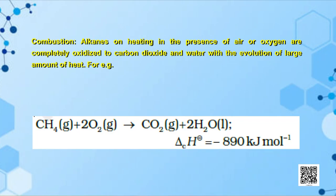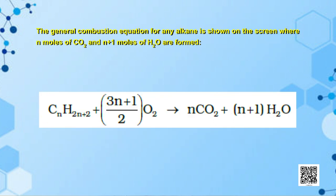The second chemical property is combustion. Alkanes on heating in the presence of air or oxygen are completely oxidized to carbon dioxide and water with the evolution of a large amount of heat. For example, methane + O₂ gives CO₂ + H₂O. The general combustion equation for any alkane CₙH₂ₙ₊₂ produces n moles of CO₂ and (n+1) moles of H₂O.